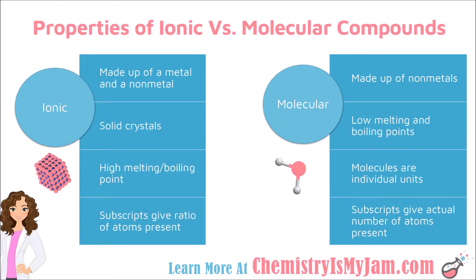In terms of physical properties, ionic compounds are solid crystals at room temperature, have high melting and boiling points, and the subscripts in the compound give you the ratio of the ions present. Molecular compounds typically have low melting and boiling points, are made up of individual discrete molecules, and the subscripts give you the actual number of atoms present.